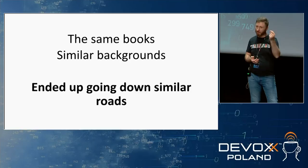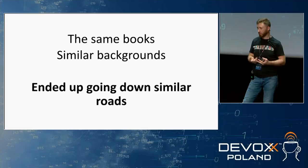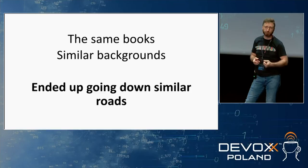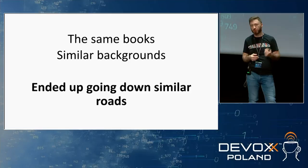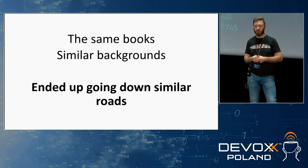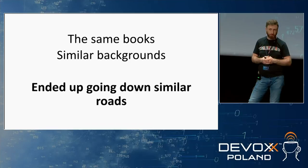Why do we invent the same things? Because we read the same books, we watch the same movies, we learn about similar things. Nowadays it's easier with the internet — we have immediate access to knowledge shared across the globe. Before the internet it was more difficult, but people were traveling and learning from each other. So it ends up going down similar roads to the same solution.